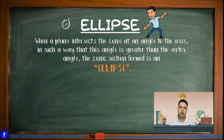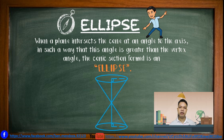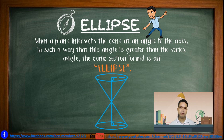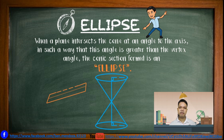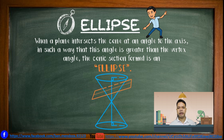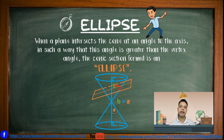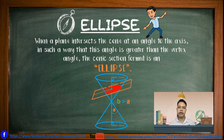Let's begin with an ellipse. When a plane intercepts the cone in such a way that the angle formed by the plane and the axis is greater than the vertex angle, the figure formed is what you call the ellipse.